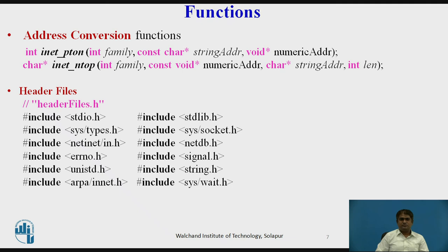Address conversion functions. Generally, we work with a 32-bit IP address in dotted decimal format. When we want to store the address in a socket, we need to convert it to a number. There are two functions used to convert an address: inet_pton (presentation to number) and inet_ntop (number to presentation).